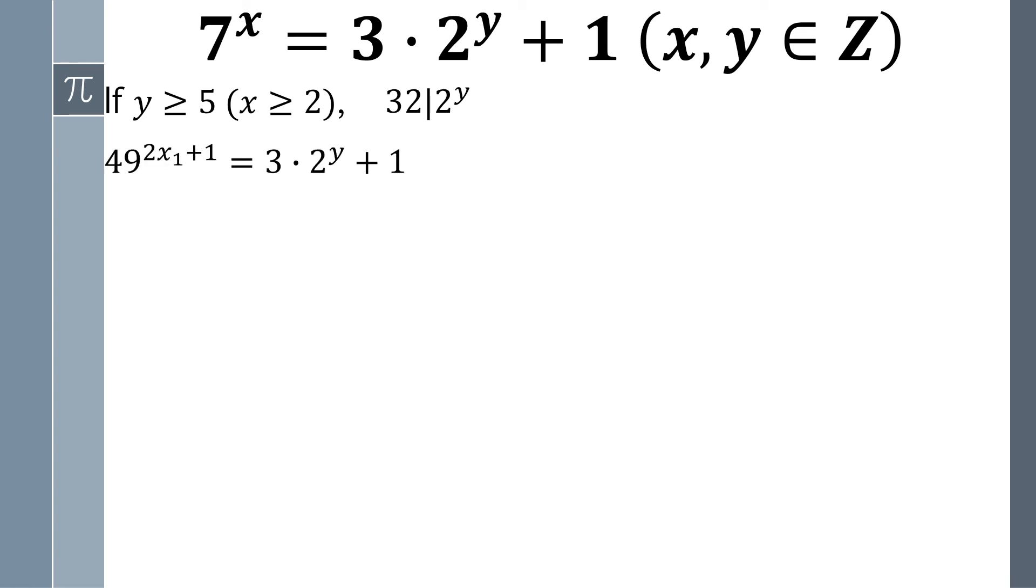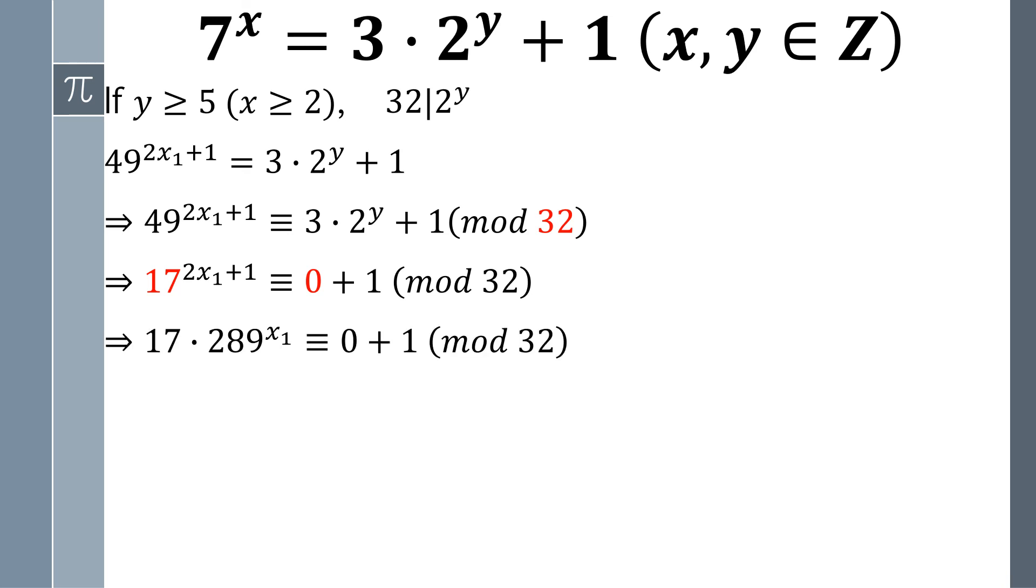And we turn the equation into a congruent relationship by applying modulus 32. 49 becomes 17 in the relationship, and 2 to the y power becomes 0. Furthermore, 17 squared becomes 289, which is congruent with 1 modulo 32.